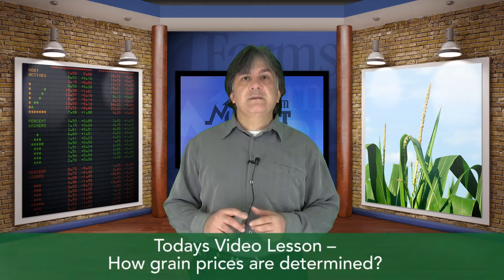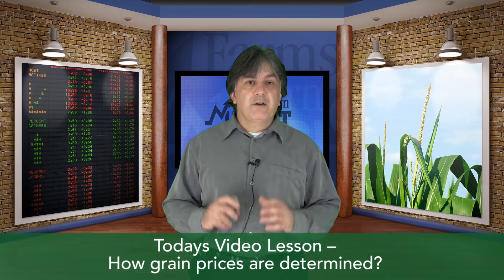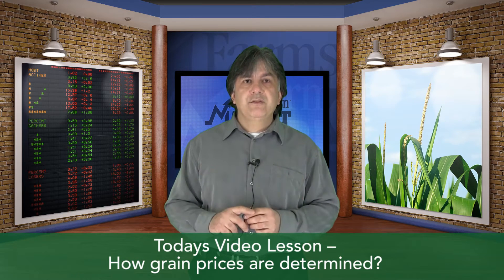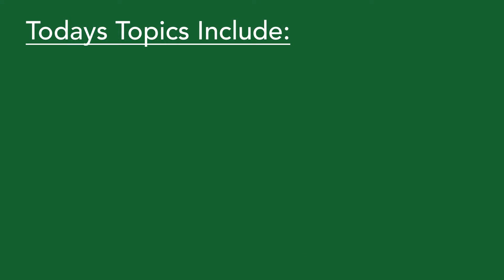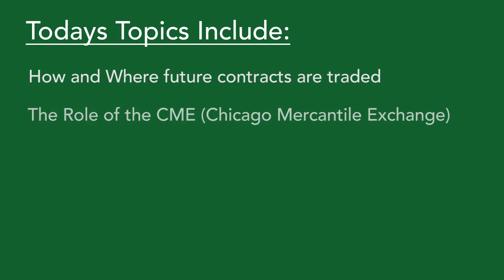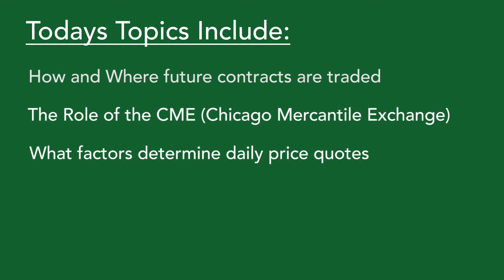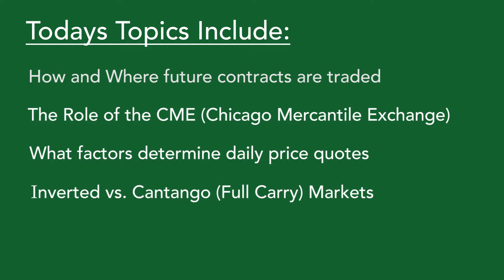Today's video lesson is about how grain prices are determined. Our focus throughout this educational video series will be on commodity grain marketing and risk management. Today's topics include how and where futures contracts are traded, the role of the CME Chicago Mercantile Exchange, what factors determine daily price quotes, and inverted versus contango or full carry — also known as a backwardation market — and whether it pays to store grain.